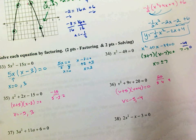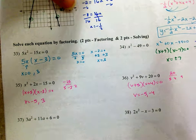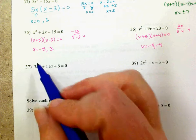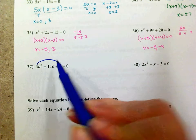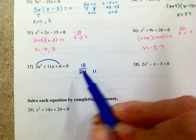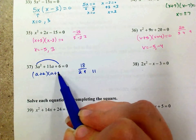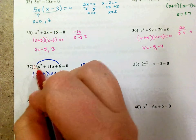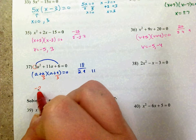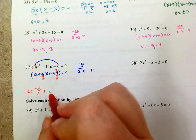On number 37, since the lead coefficient is something other than 1, multiply A times C to get 18. Factors of 18 that add to 11 are 2 and 9. You get (a + 2)(a + 9), but remember to divide by the lead coefficient. The answers are negative 2/3 and negative 3.